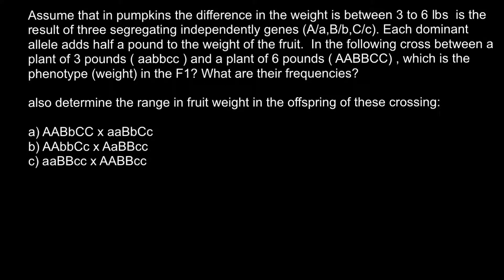Hello and welcome to Nikolai's genetics lessons. Today's problem: assume that in pumpkins the difference in weight between 3 and 6 pounds is the result of three independently segregating genes, gene A, B, and C. Each dominant allele adds half a pound to the weight of the fruit. We cross a plant of 3 pounds, homozygous recessive for all three genes, with a plant of 6 pounds, homozygous dominant for all three genes. What is the phenotype weight in the F1 generation, and what are the frequencies and range of fruit weight in the offspring?